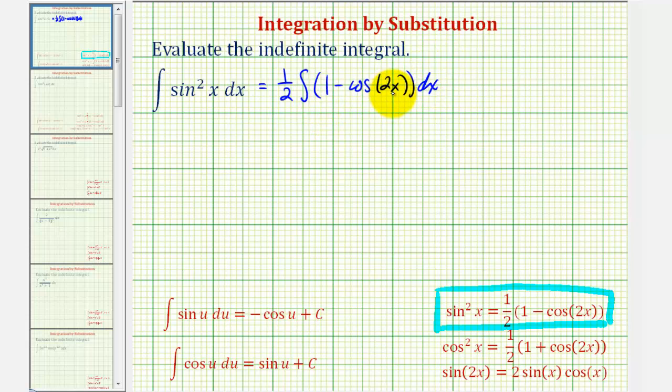So notice how to integrate cosine two x, we will have to perform u substitution. So let's go ahead and write this as two separate integrals. We'd have one half times the quantity the integral of one dx minus the integral of cosine two x.